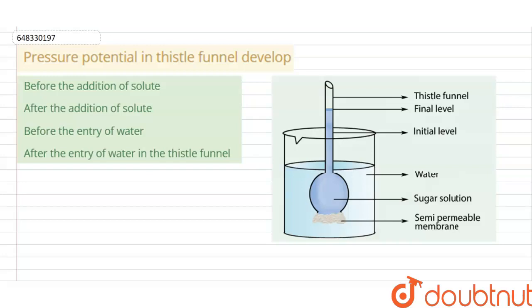Hello everyone. In this video we have a question: at what point is pressure potential developed in the thistle cell funnel experiment? The options are: before addition of solute, after addition of solute, before entry of water, and after entry of water into the thistle cell funnel.